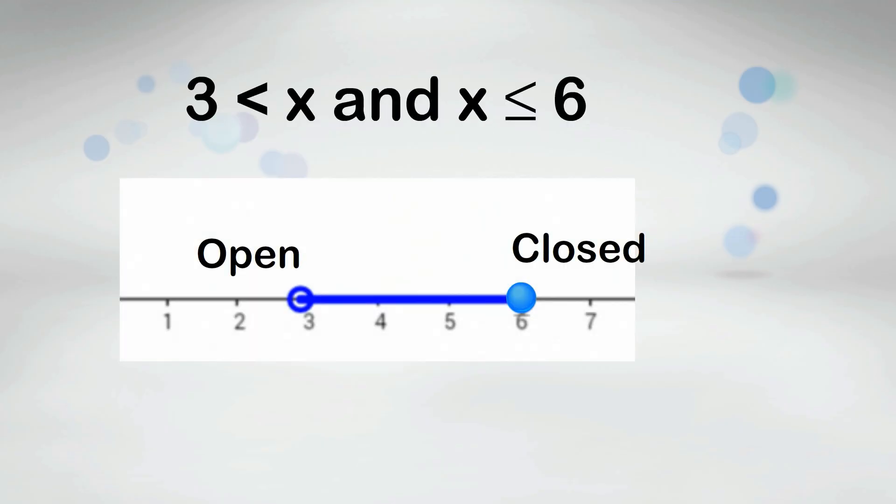3 is less than x and x is less than or equal to 6. The graph of this inequality will be between the two numbers because it uses and.